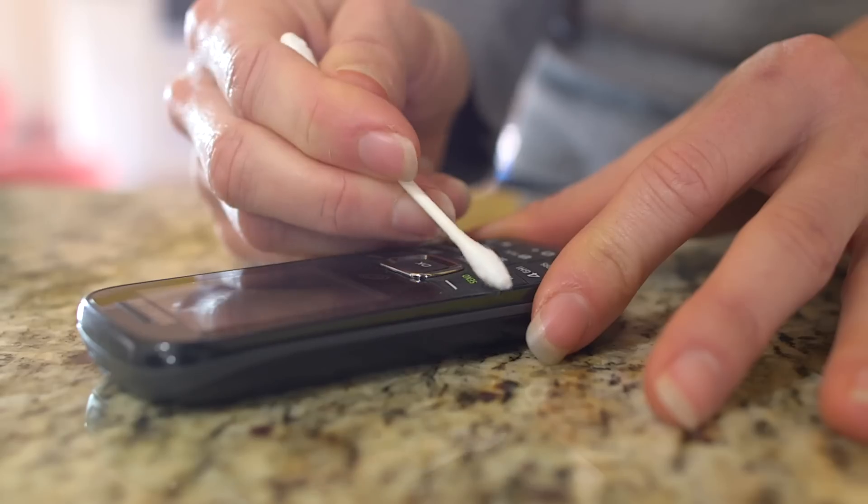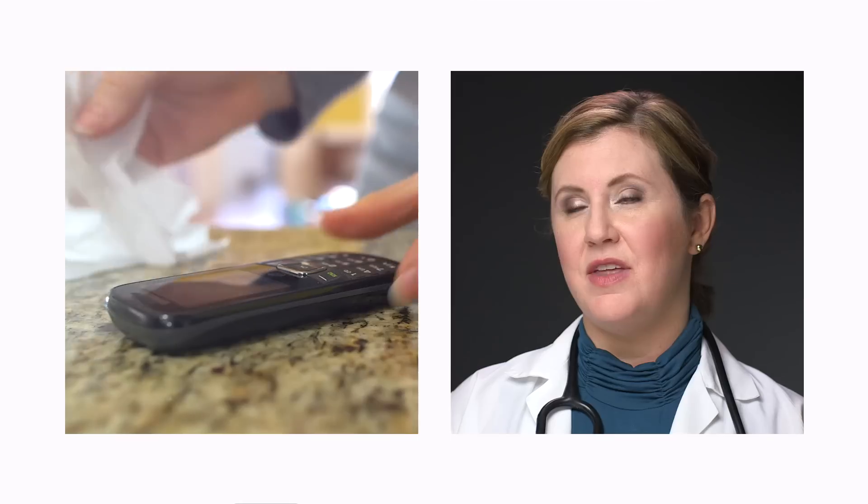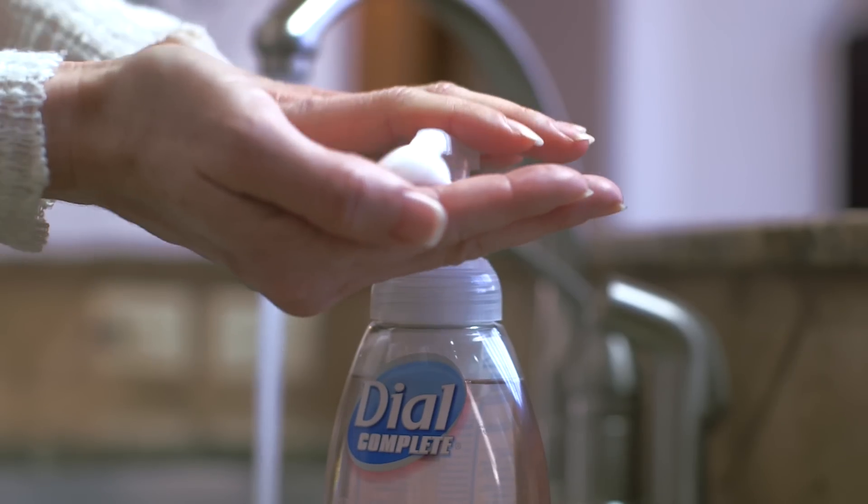Plus, it's difficult to clean. These phones get covered in germs. You need to wipe down your cell phone several times a day with an antibacterial wipe, and remember to wash your hands with soap and warm water after each use.